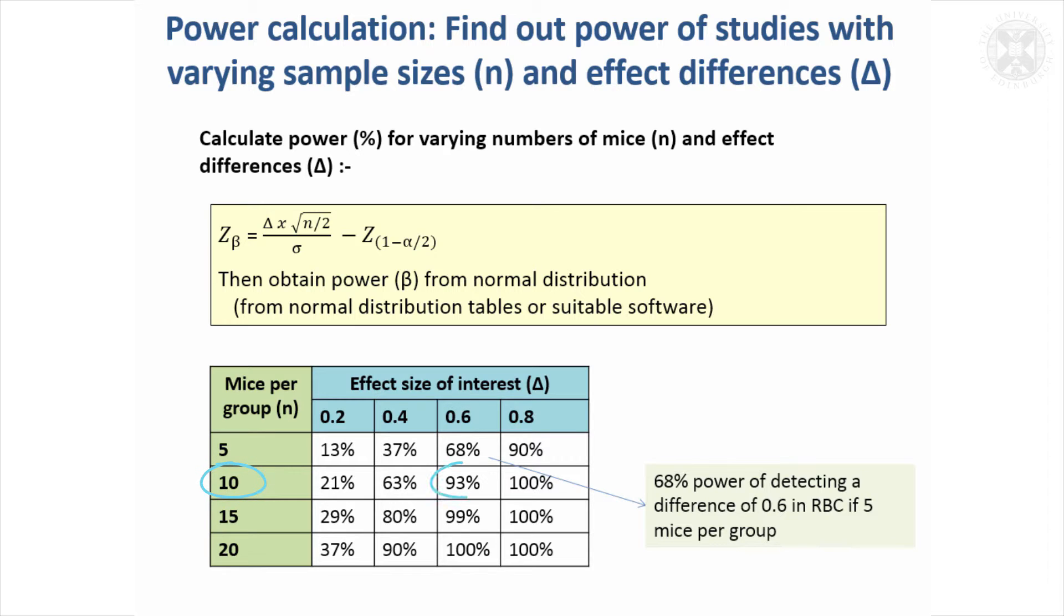Power is very low if you're looking at a small effect size, as low as 13 percent. Really not worth doing the study in fact for any of these group sizes. Even with up to 20 mice, the study would be quite underpowered to detect a statistically significant difference.